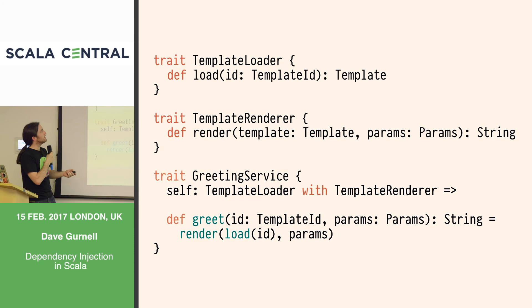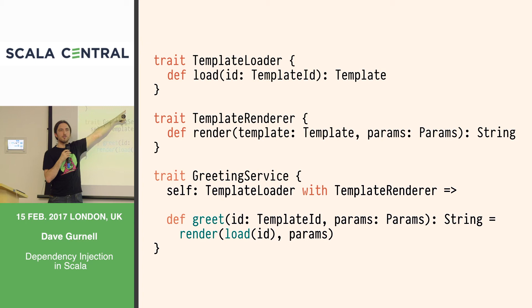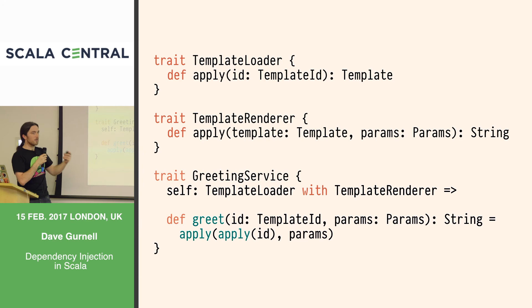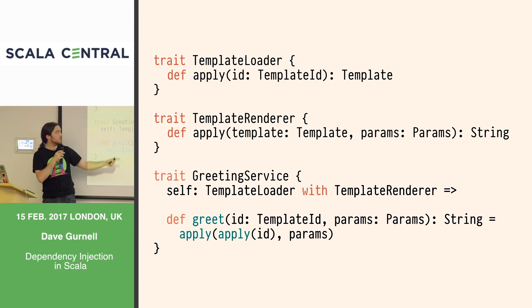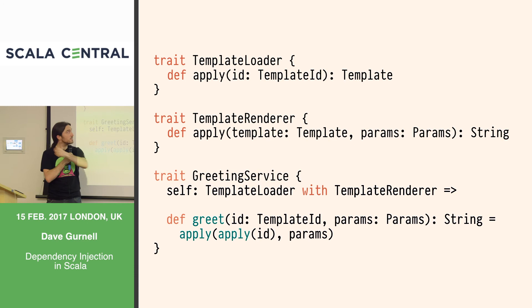But there's a problem — one of the three great problems of computer science: naming things. If both traits have a method called apply, they're coming from completely different places, doing completely different things, but called the same name. This kind of naming conflict is the problem with direct trait-based DI or inheritance. It's a reasonable approach for small groups of modules, but application-wide we quickly get naming conflicts and run out of names — things like value, context, executor, or logger.